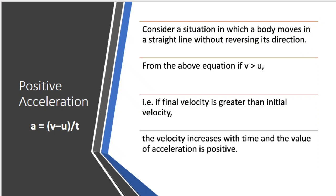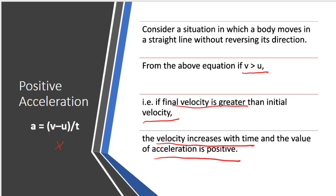There are two conditions. First condition: V is greater than U, meaning the final velocity is more than the initial velocity. So velocity increases with time and the acceleration value is positive. This is called positive acceleration — normally we simply call it acceleration.